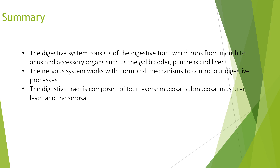In summary for part one of the digestive system: the digestive system consists of the digestive tract running from the mouth to the anus, and accessory organs such as the gallbladder, pancreas, and liver. The nervous system works alongside hormonal mechanisms to control our digestive processes. The digestive tract is composed of four layers: mucosa, submucosa, muscular layer, and serosa. Please tune in for part two of the digestive system. Thank you.